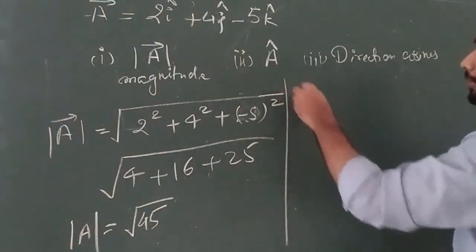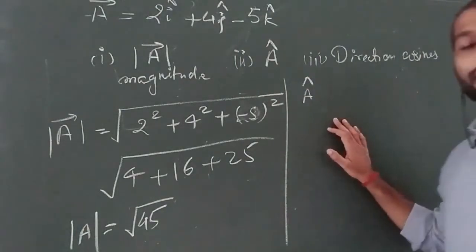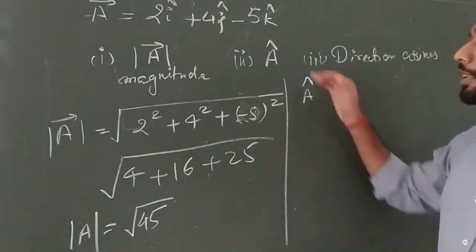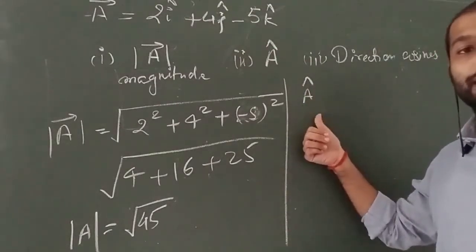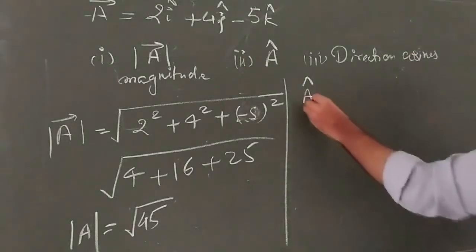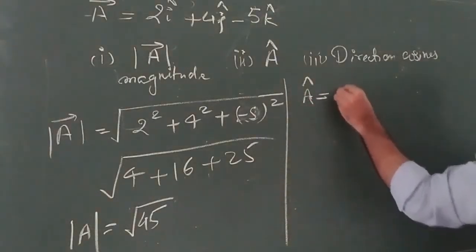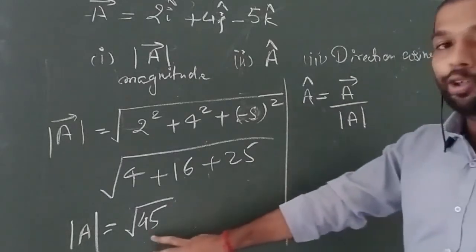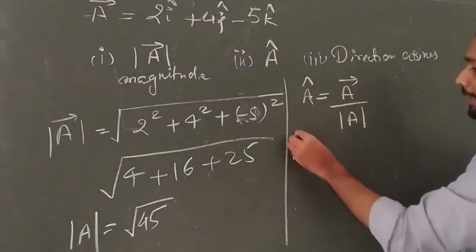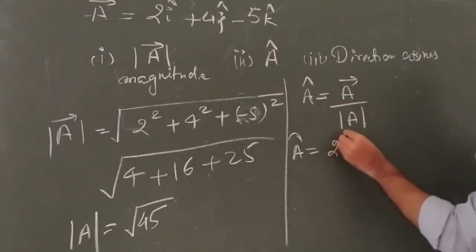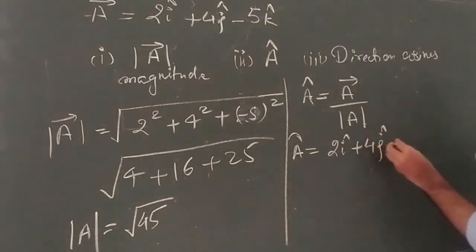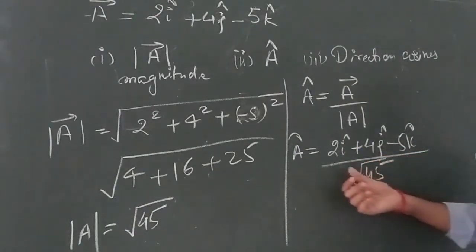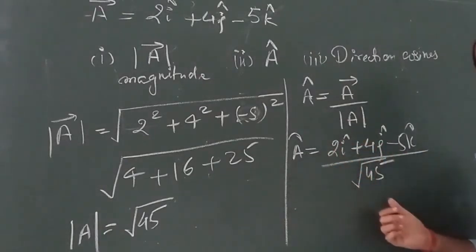Now let us talk about the unit vector. A unit vector has a magnitude of 1 and gives us the direction of the vector for which it is defined. Here it is defined for A, so it gives the direction of vector A. It is given as the ratio of vector A upon mod of vector A. So we write: â = (2î + 4ĵ - 5k̂) / √45.